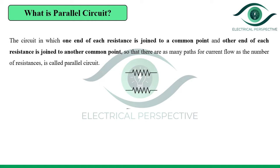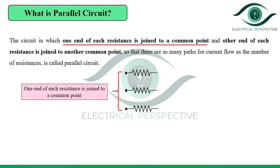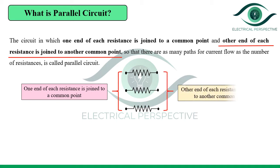Now let us consider three resistances. As per the definition, one end of each resistance is joined to a common point. So the initial ends of all resistances are connected together to a common point. Similarly, the other end of each resistance is joined to another common point. All these ends are connected to another common point.